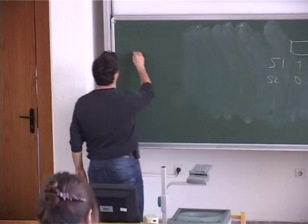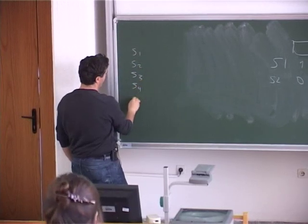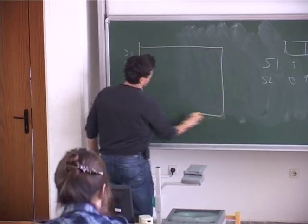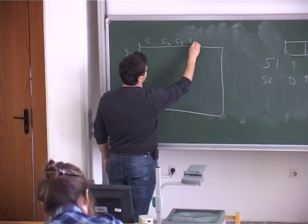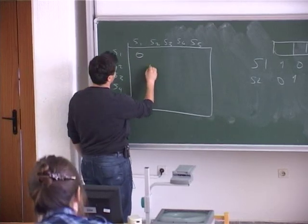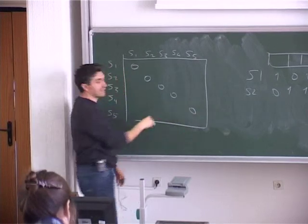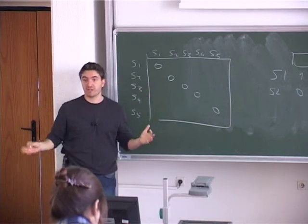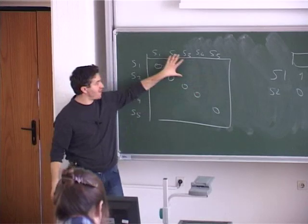Imagine you have five species S1, S2, S3, S4, S5. Distance-based methods use a distance matrix, which is a square matrix. The diagonal is zero — the distance of a species with itself is zero. It is a symmetric matrix, meaning the distance between S1 and S2 equals the distance between S2 and S1. So we only need to fill in one half of the matrix.